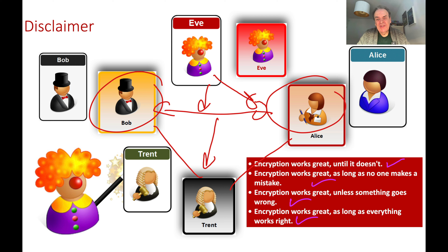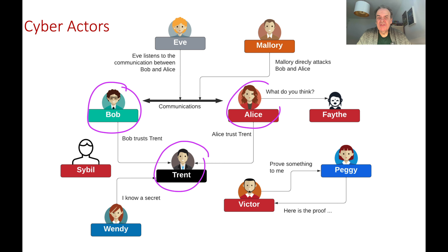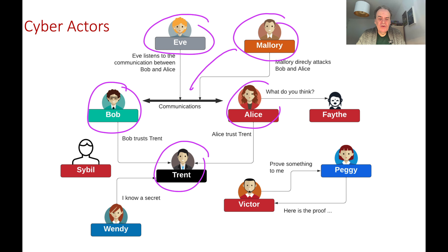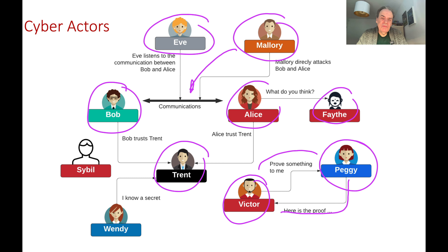The methods we apply are fairly secure, but unfortunately errors and problems can occur in the methods we implement. Here are some of the cyber actors: Bob, Alice, and Trent — Bob and Alice both trust Trent. Eve might eavesdrop on communication, and Mallory might actively attack Bob or Alice. Faith is a trusted entity. When proving things, we talk about Peggy the prover and Victor the verifier, so that Peggy can create a proof and Victor will verify it. And Wendy — well, she knows a secret.